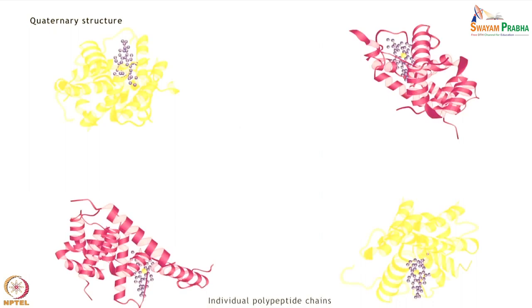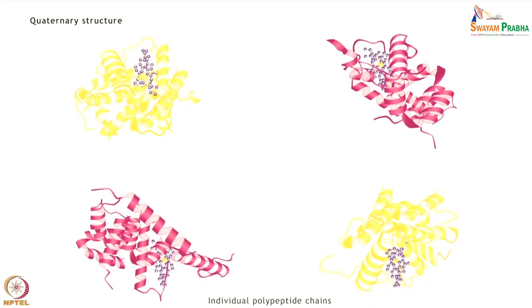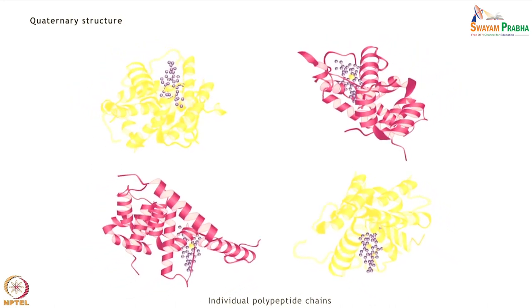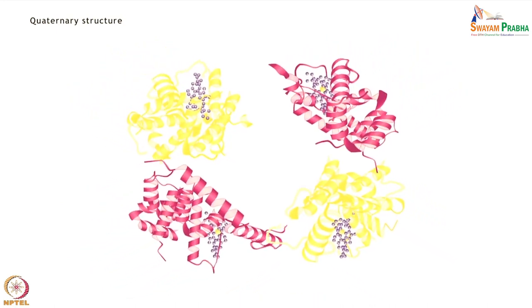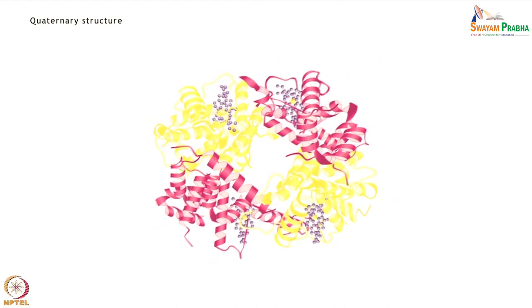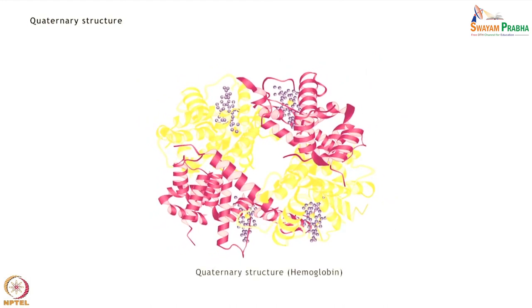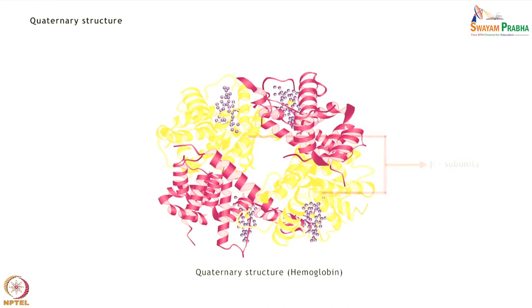Different subunits or polypeptide chains interact with one another and are held together by means of ionic, electrostatic, and Van der Waals interactions. Such multi-subunit proteins are said to have a quaternary structure — the final level of protein structure.